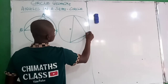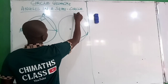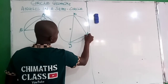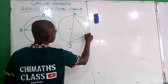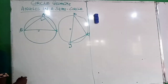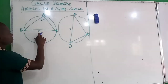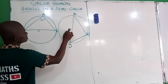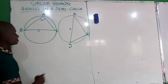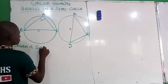Let's use this as A, B, C and use here X, Y, and Z. This is the center of this circle, and this is also the center of this circle — a semicircle.